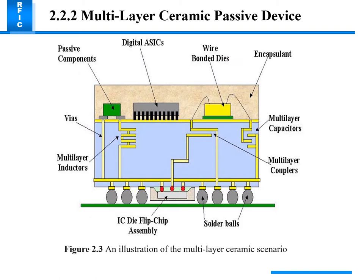Multi-layer ceramic passive devices are illustrated here with solder balls integrated with IC die flip-chip assembly. The structure includes multi-layer inductors, wires, and passive components, with ICs wire-bonded and connected to multi-layer inductors and multi-layer capacitors. Couplers also play an important role in this assembly.